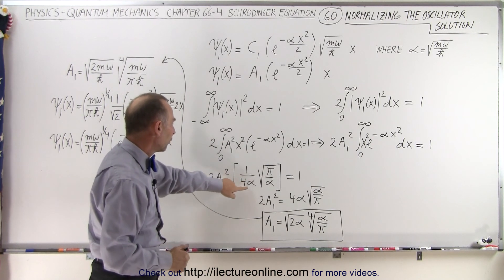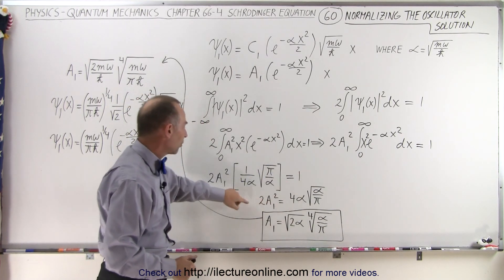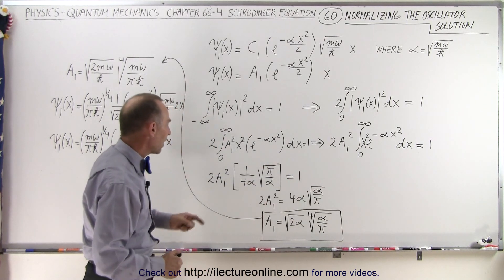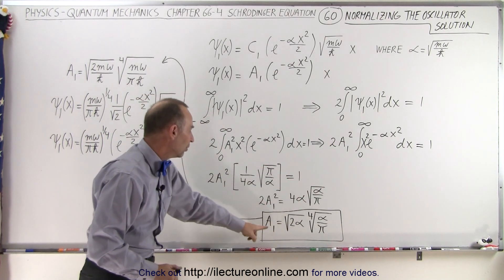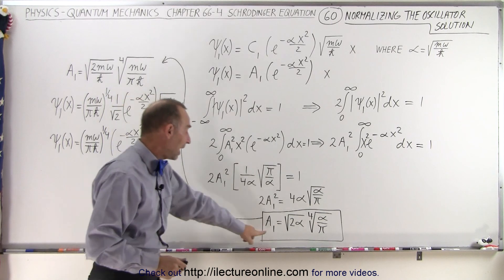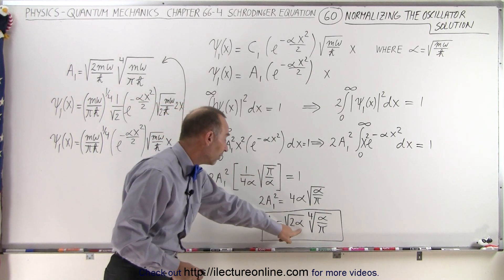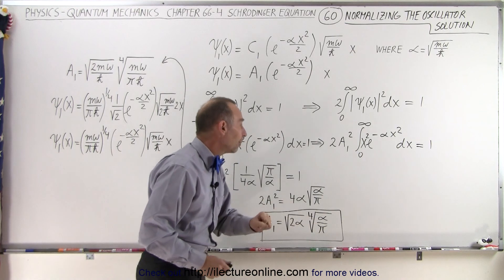Now we take the 1 over 4 alpha, move it to the other side, so we multiply the other side, we turn this one around, we divide both sides by 2, and we take the square root that gives us a1 equal to the square root of 2 alpha times the fourth root of alpha over pi.